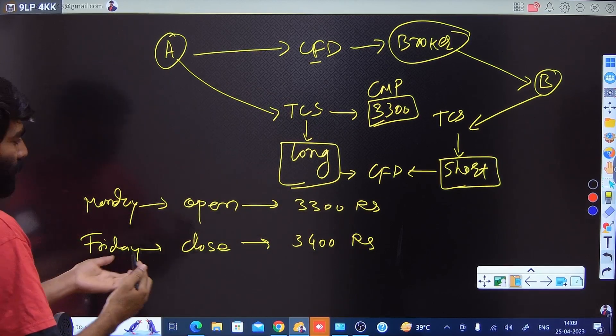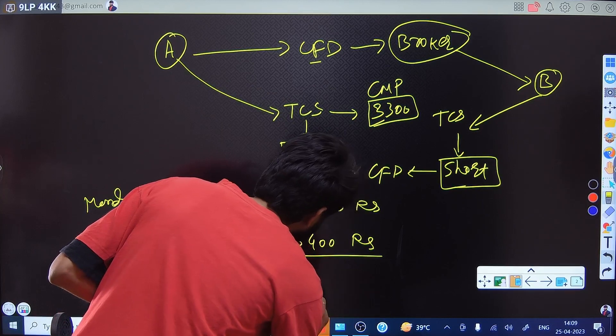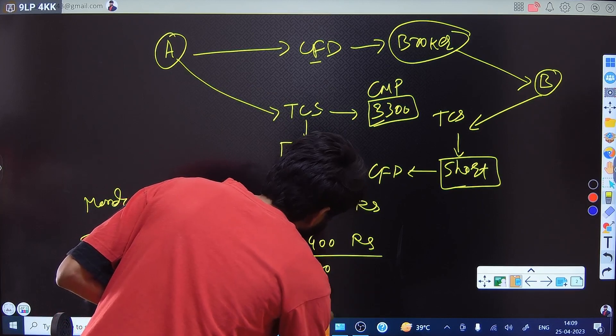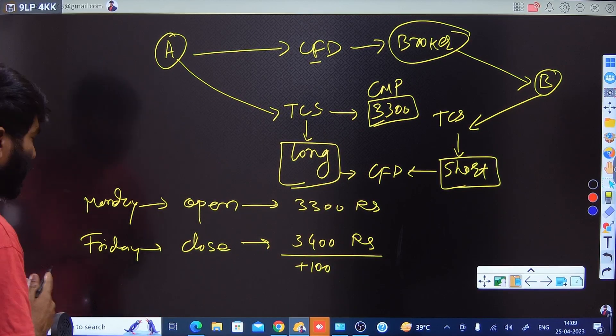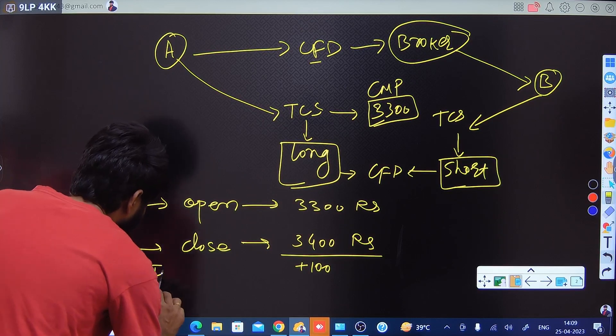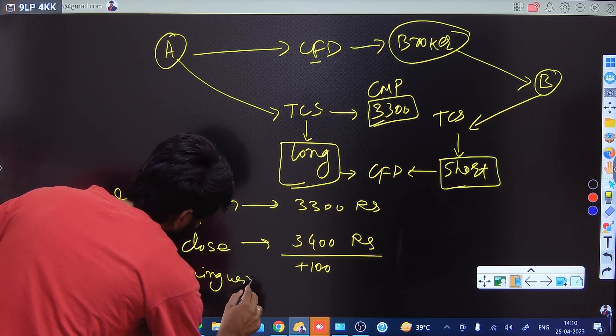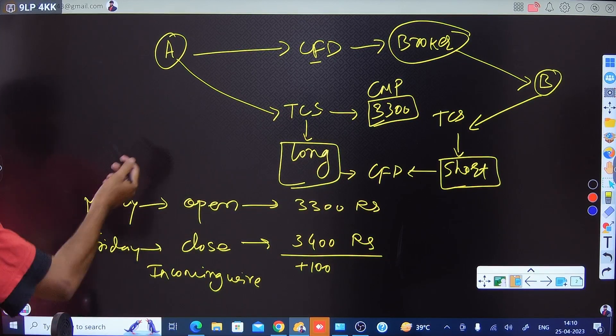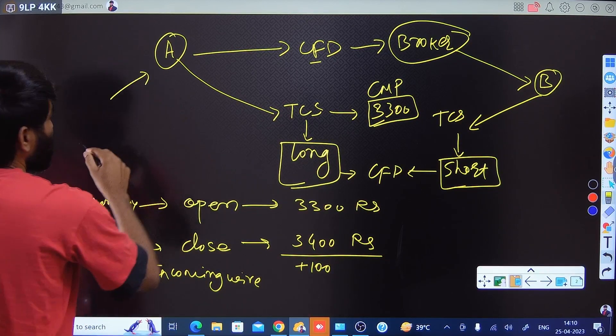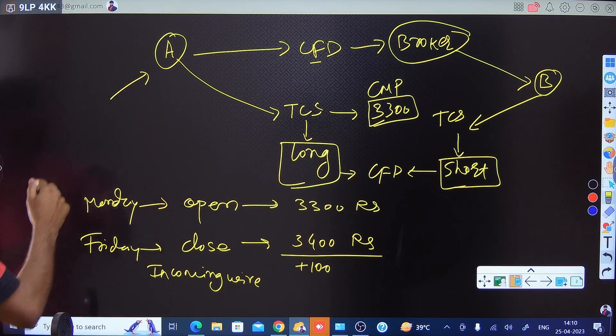Let's say when the contract closes, the price reached 3400. If you see there would be a difference of 100. That difference of 100 becomes your incoming wire for counterparty A, because in this particular contract counterparty A earns 100 rupees from the contract.